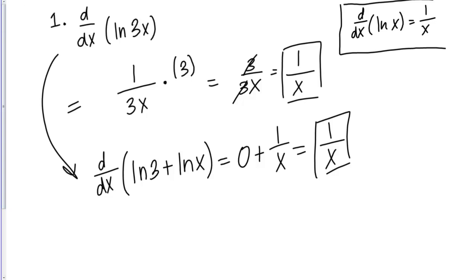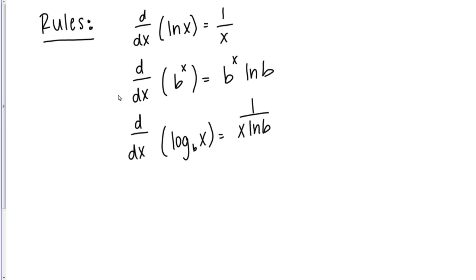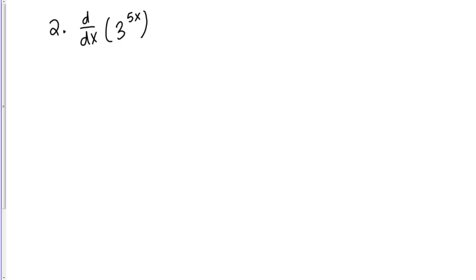Let's do a different one: the derivative with respect to X of 3 to the 5X. The basic rule to use here is the second rule — the derivative of B to the X equals B to the X times natural log of B. This rule applies when you have a base B, some number, raised to X as the exponent. Here I have a number, 3, raised to an exponent involving X. My exponent is not just X, it's 5X, so I'm going to have to use a chain rule in addition to the basic rule.